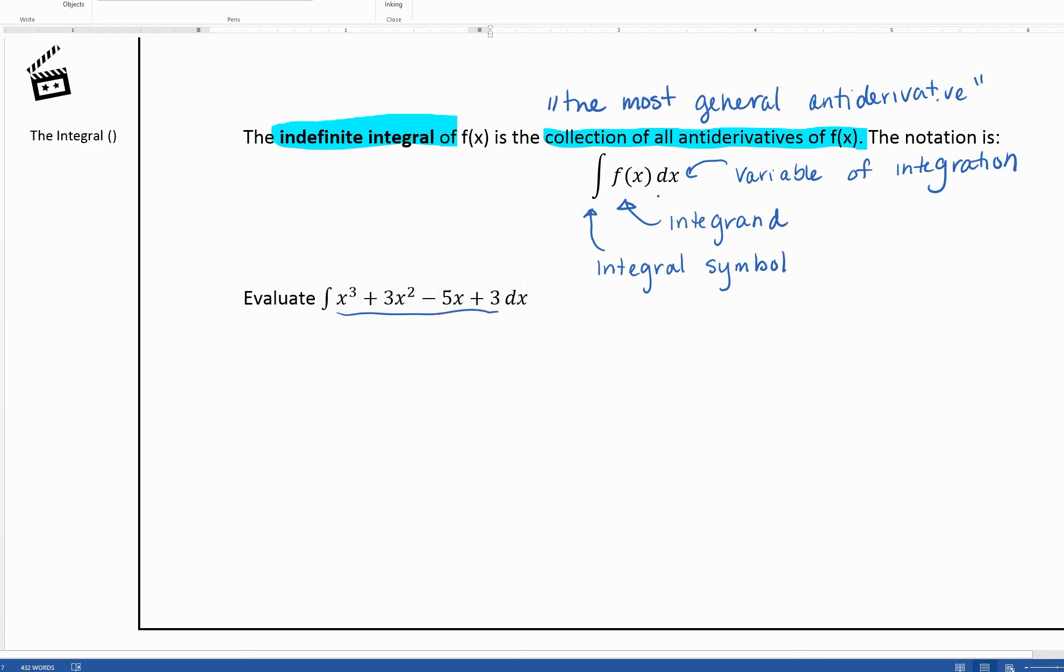So we have x cubed plus 3x squared minus 5x plus 3. So the anti-derivative would be x to the fourth over 4 plus 3x cubed over 3 minus 5x squared over 2 plus 3x plus c.